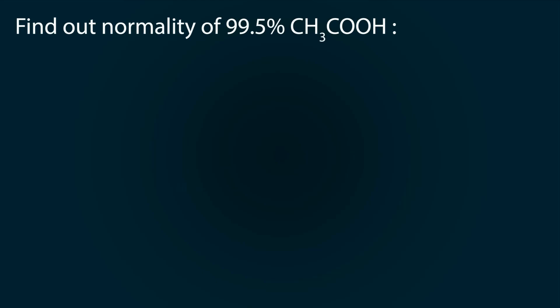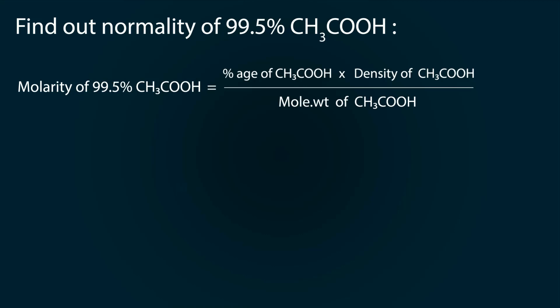First, we have to find out the normality of 99.5% CH₃COOH, but let's find molarity first. Molarity equals percentage multiplied by density divided by molecular weight, whole multiplied by 10. So the percentage is 99.5, density is 1.05, and molecular weight is 60. The molarity is 17.41.